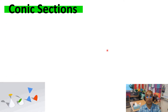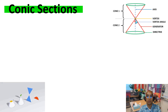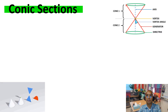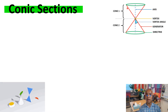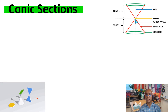Let us refresh our knowledge about the cone. A cone is a three-dimensional figure with a vertex and a circular base. Suppose we have a fixed line — the blue one — and another line, the red one, and these two lines intersect at a particular point. If this red line rotates around the fixed line, it forms two double right circular cones. The fixed line is called the axis, the common point is called the vertex, and the red line that rotates is the generator. The angle formed by the axis and the generator is the vertex angle, while the circumference of the base is the directrix.